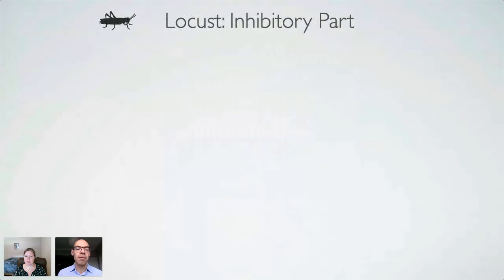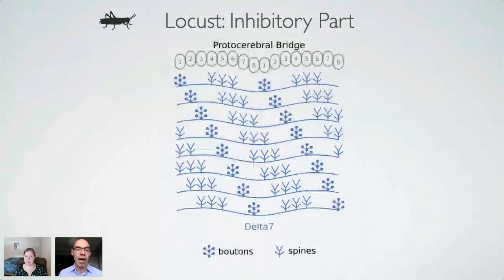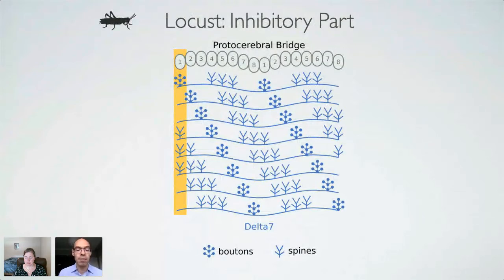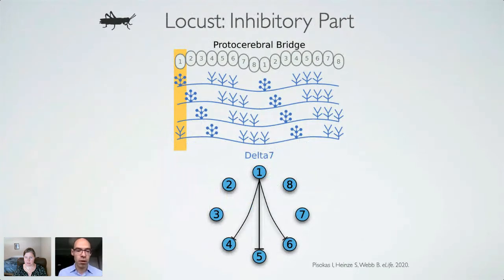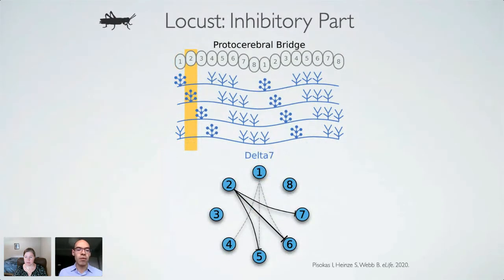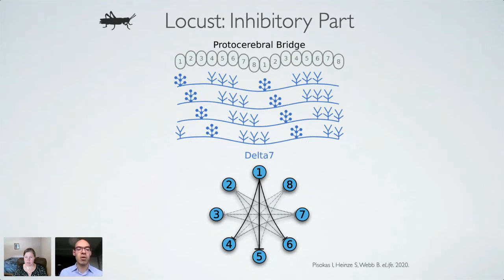Now we can do the same for the locust. In the locust, there are again eight inhibitory neurons that run along the length of the protocerebral bridge, and again all neurons have the same pattern of synaptic terminals shifted by one column. However, in each segment, only three neurons have dendritic terminals and therefore receive input. We can repeat this for all eight neurons to get the whole circuit. We see that in the locust, the circuit has a local inhibition pattern — each neuron inhibits only some of the other neurons.